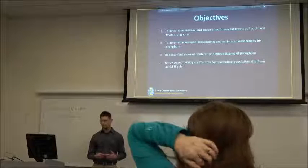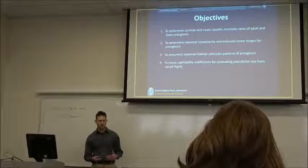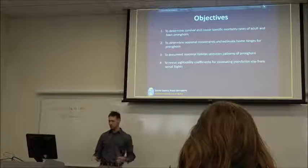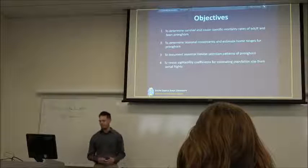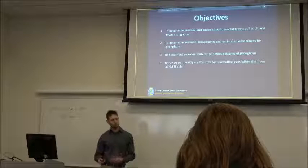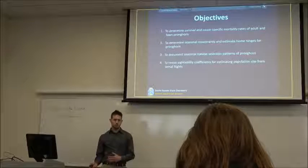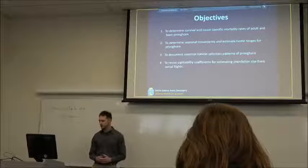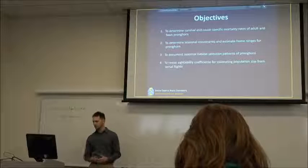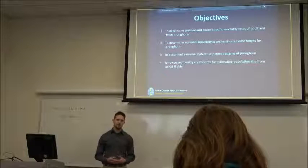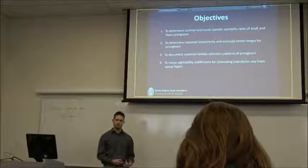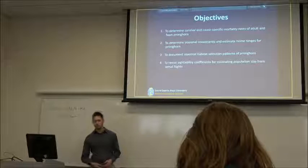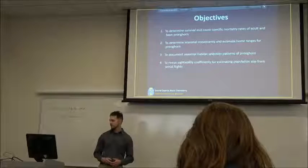So, our objectives to our research are to, one, determine survival and cause-specific mortality for adult and pronghorn, as well as yearling. We want to look at this from all different age demographics within the population. Two, we want to determine seasonal movements and calculate home range sizes. We want to be able to compare differences in seasonal home ranges and see what pronghorn are using at certain times of the year. And that ties us into our third objective, which is to document seasonal habitat selection. We want to know what type of resources pronghorn are using and at what specific times of the year. And four, we want to revise sightability coefficients for estimating population size from aerial flights.